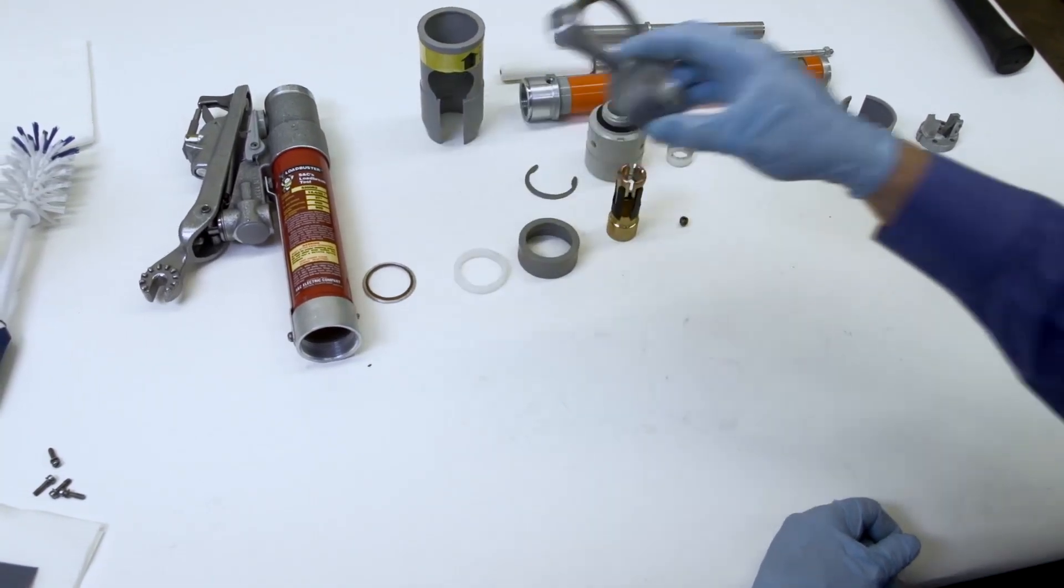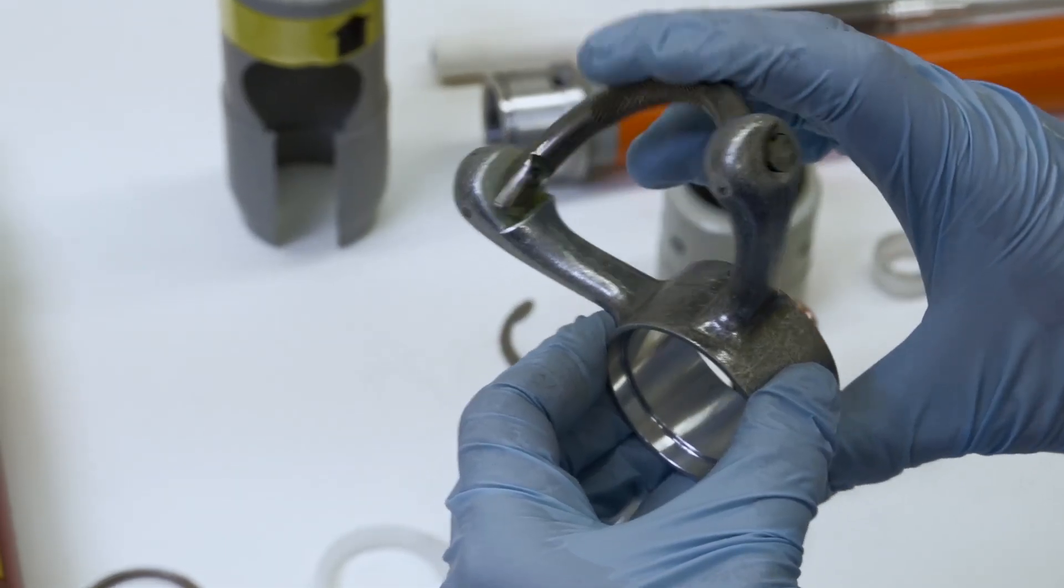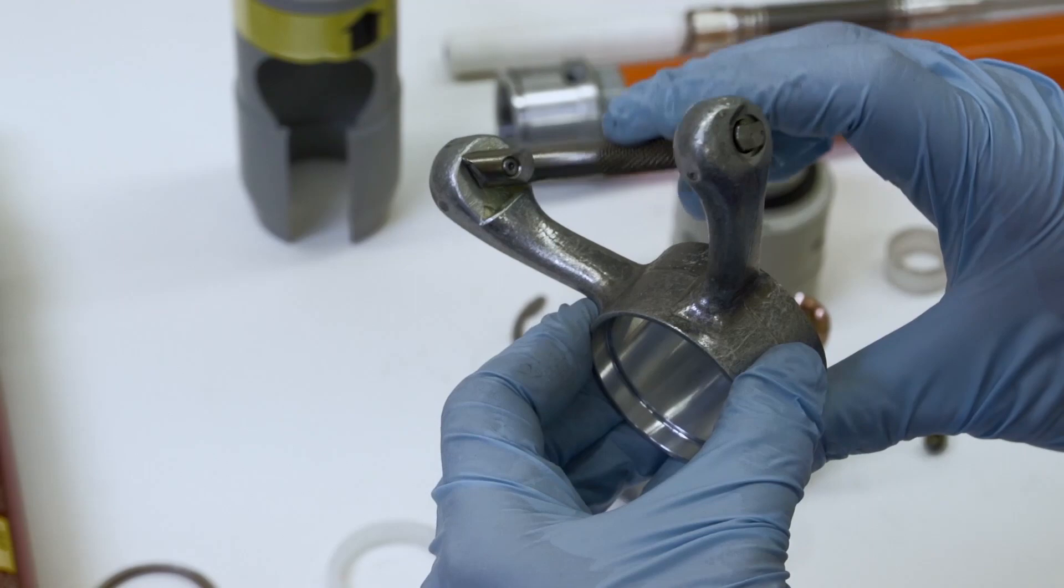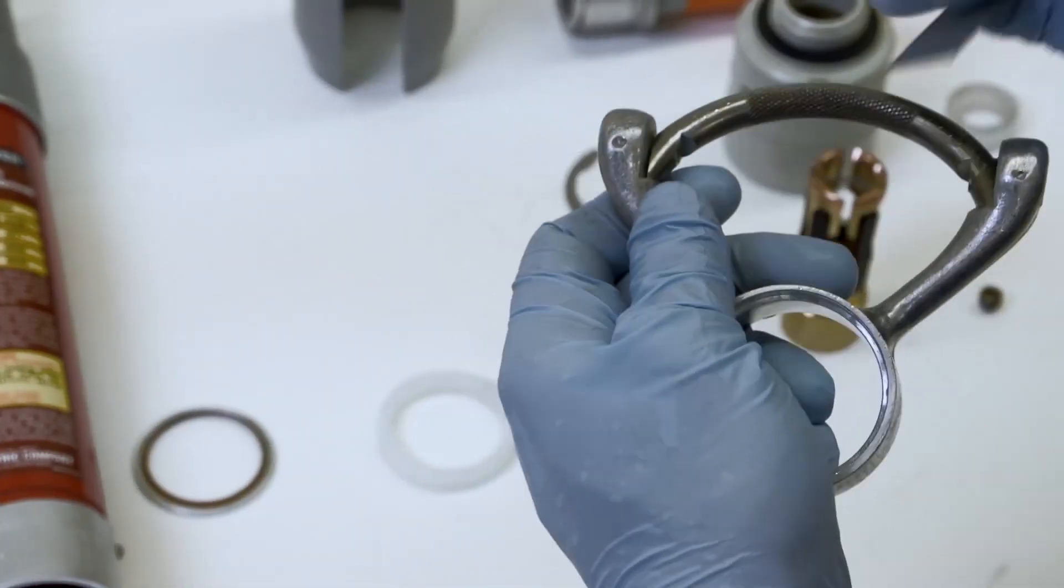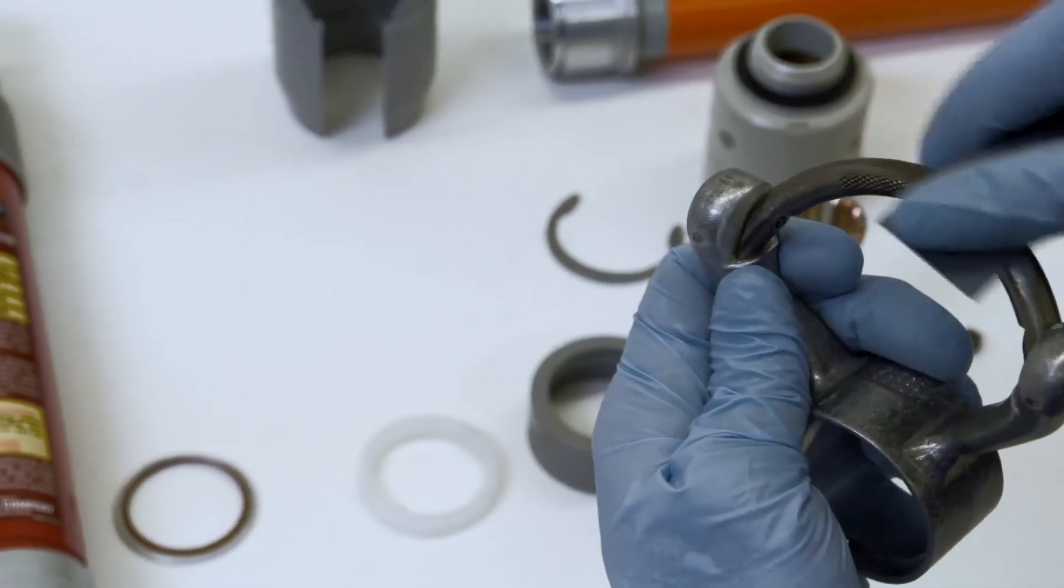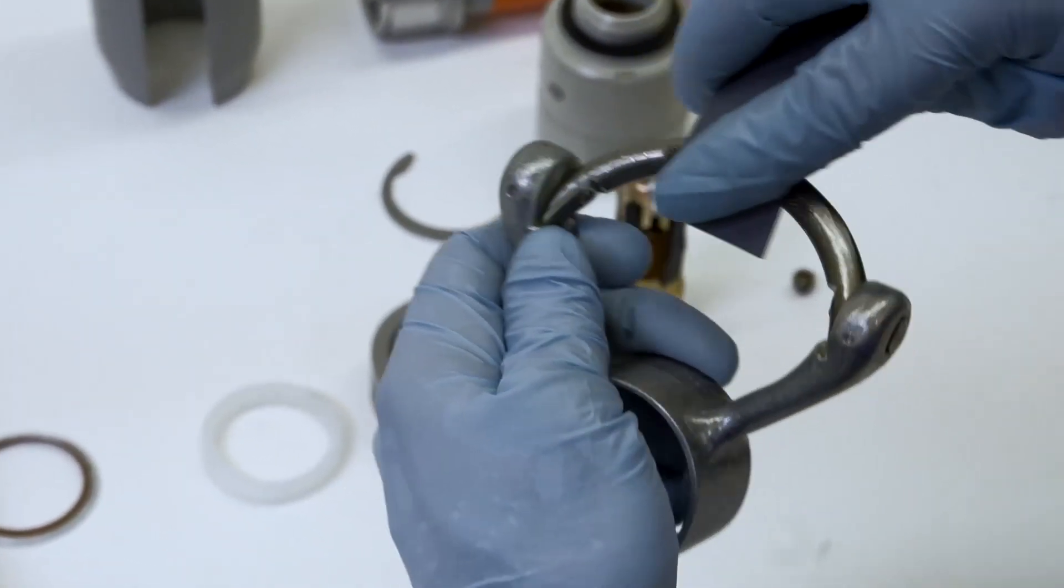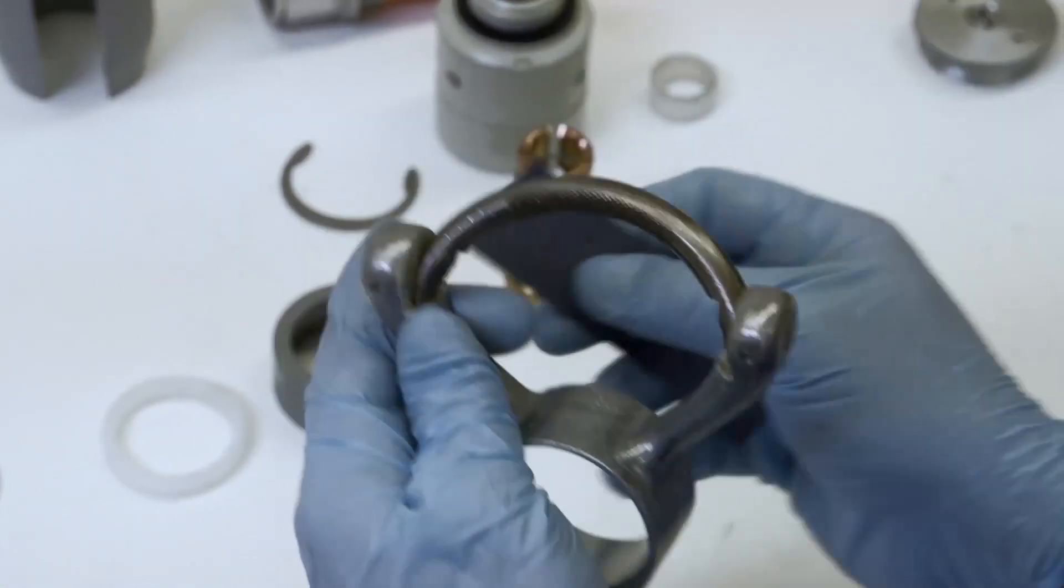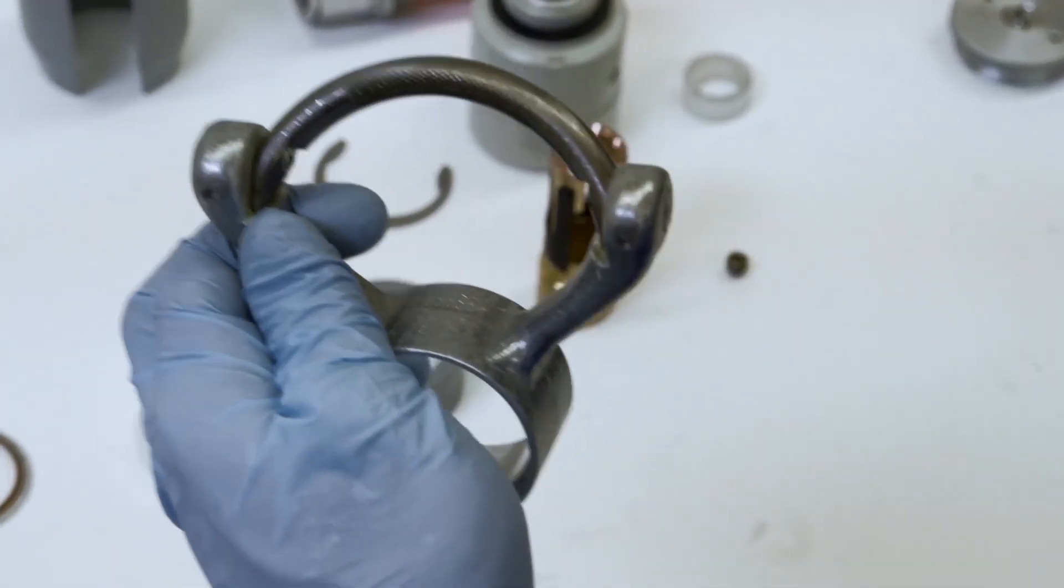Next we'll examine the anchor assembly. The assembly is spring loaded and should snap back when pulled. Polish the anchor assembly with an emery cloth to remove pitting. If severely pitted, burned, or if the spring does not work, the anchor assembly should be replaced.